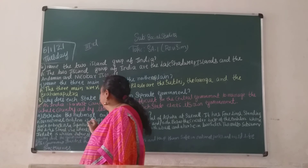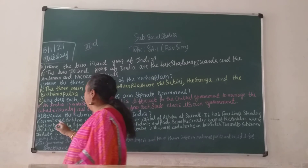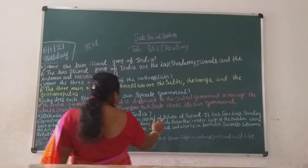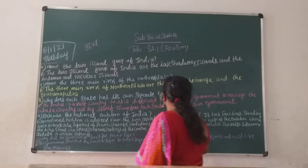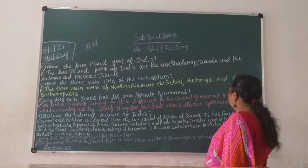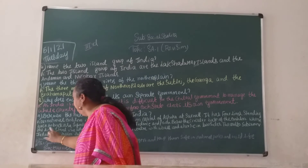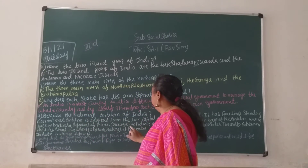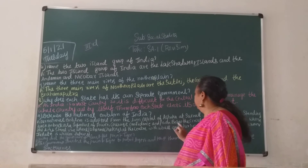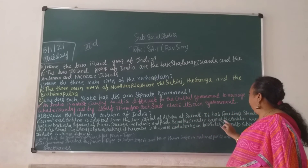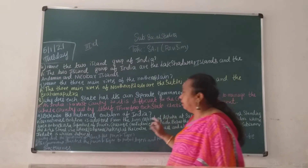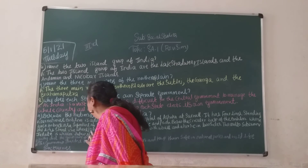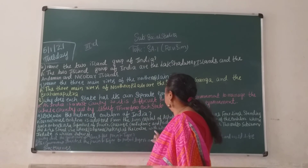Describe the National Emblem of India. Our national emblem is adopted from the lion capital of Ashoka at Sarnath. It has four lions standing back to back as a symbol of power, courage, confidence and pride. Below the circular base of the emblem where the lion stands is a big Dharma Chakra at the center.